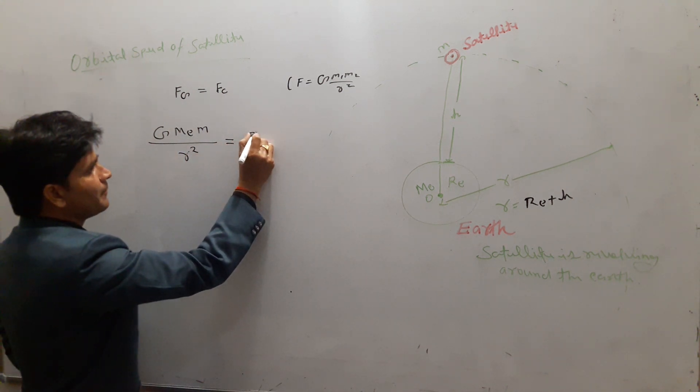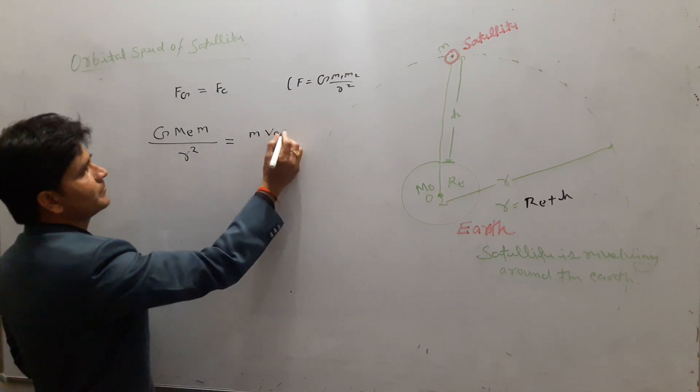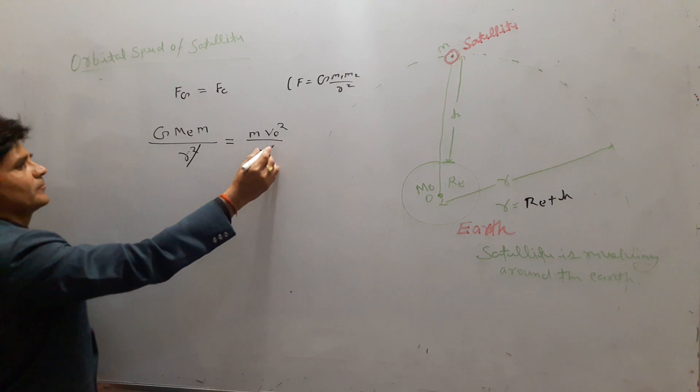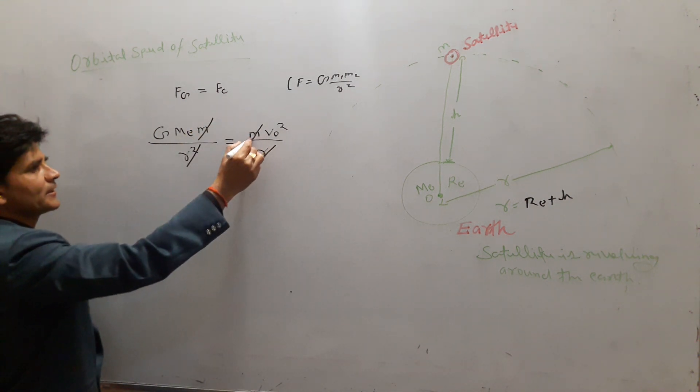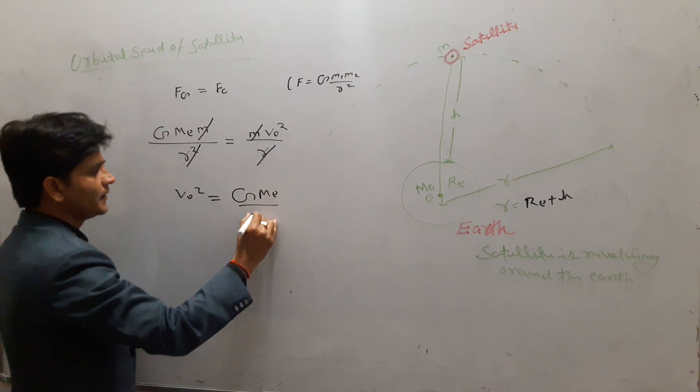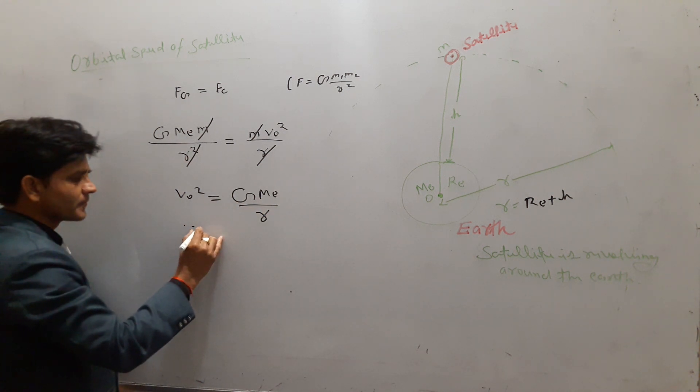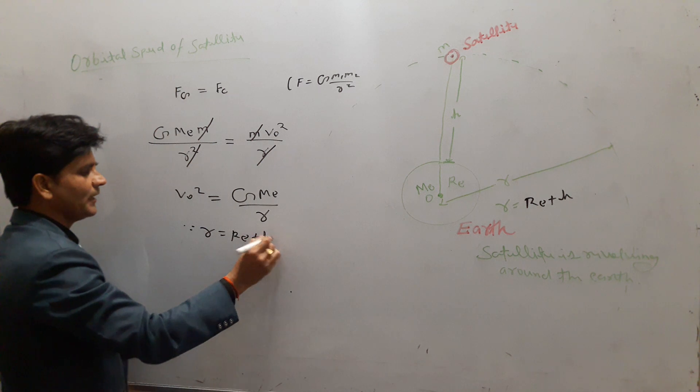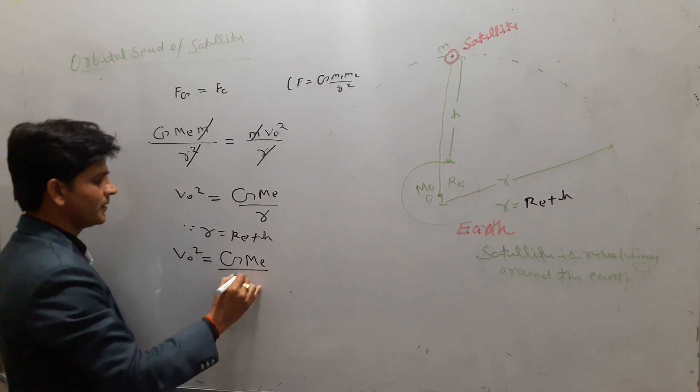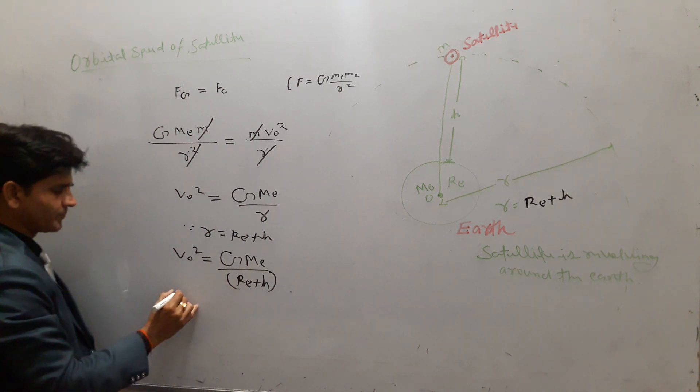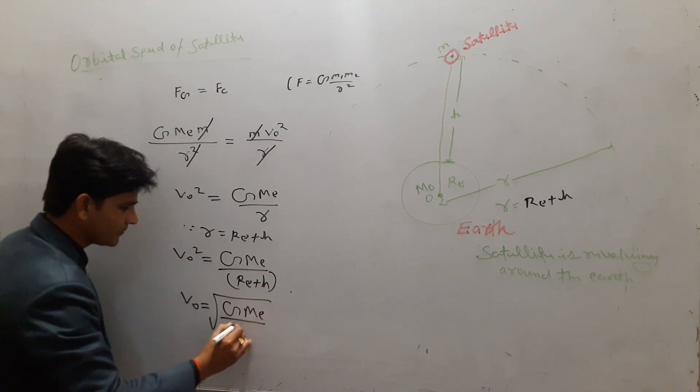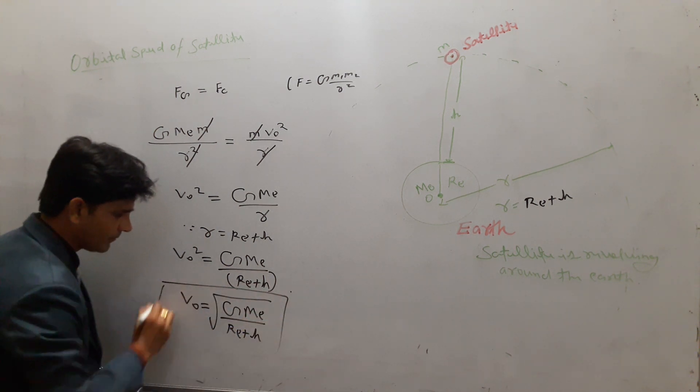And the centripetal force is m × V_0² / r, where V_0 is the orbital speed. Clearly, this r² is cancelled by this r. This small m is cancelled by this. And then, V_0² equals G × M_E / r, where r equals R_E + h. Now, we can put that value. V_0² equals G × M_E / (R_E + h). This is the orbital speed of the satellite.